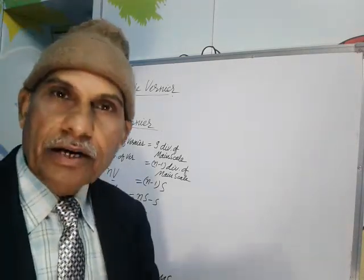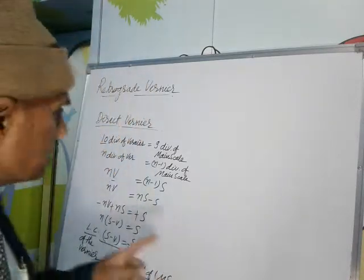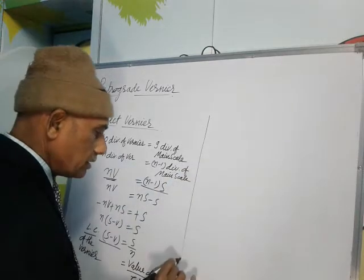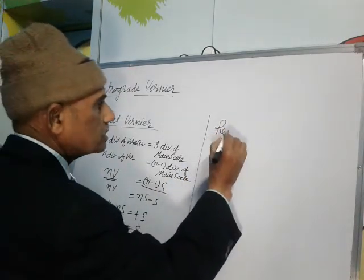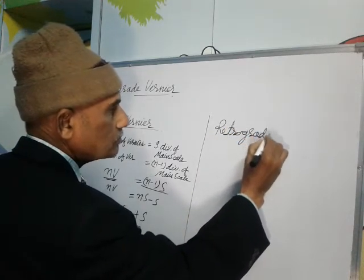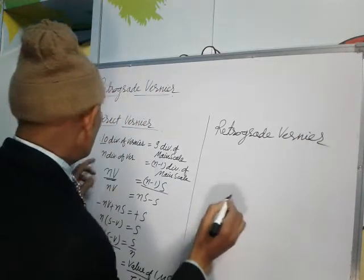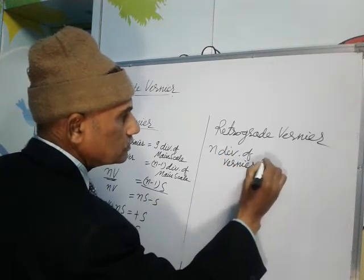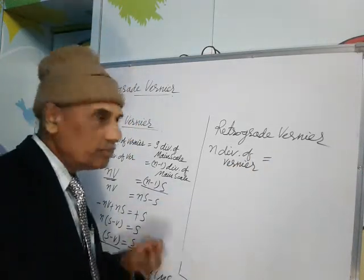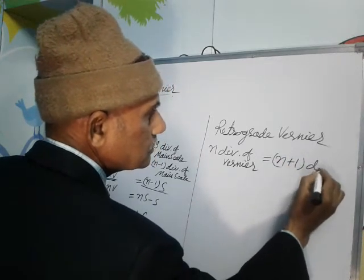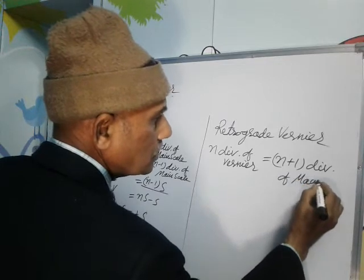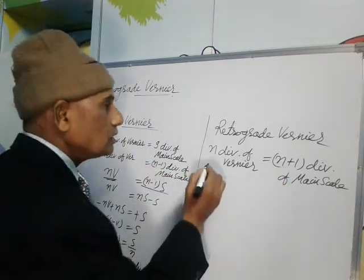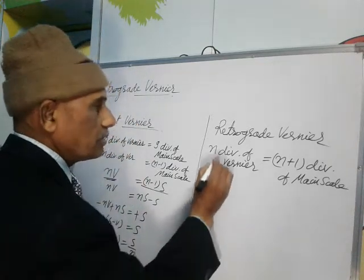Now let us see what is Retrograde Vernier. In Direct Vernier, n divisions of the Vernier equal n minus 1 divisions of the main scale. In Retrograde Vernier, n divisions of the Vernier equal n plus 1 divisions of the main scale.